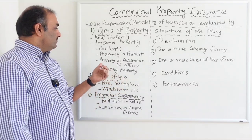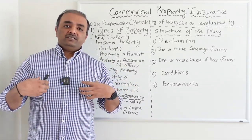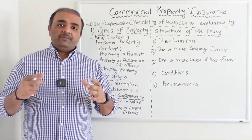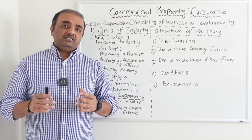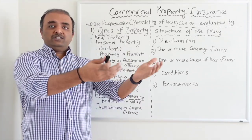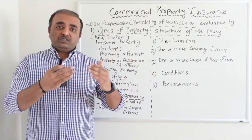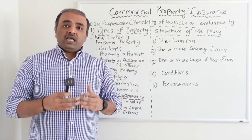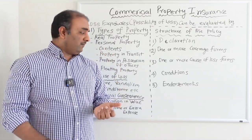The third type is property in possession of others. For example, if I'm a cameraman using my camera as my personal property, and for some reason it gets damaged and I give it to a repair shop to get it fixed, then my personal property is in the possession of others. That is also one type of cause of loss that we have to take into account.